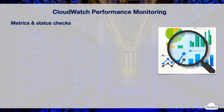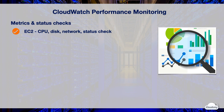CloudWatch monitors the performance of AWS resources using metrics and status checks. CloudWatch can monitor EC2 instances on CPU utilization, disk activity, network performance and status checks. You can also create custom metrics such as memory for EC2 instances on CloudWatch.